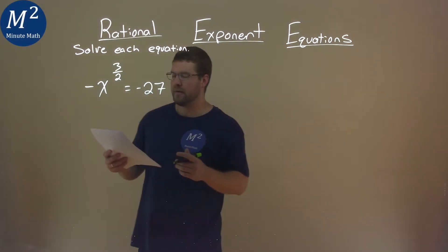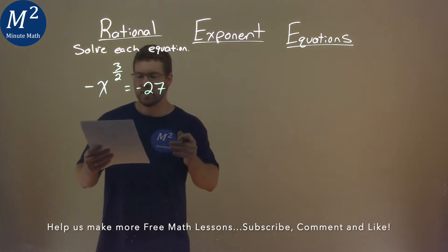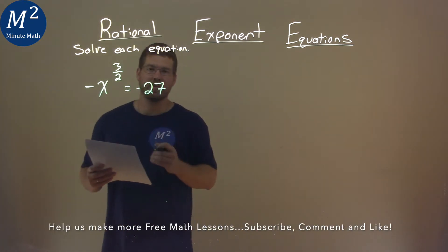We're given this problem right here. Negative x to the 3 halves power equals a negative 27, and we need to solve this equation.